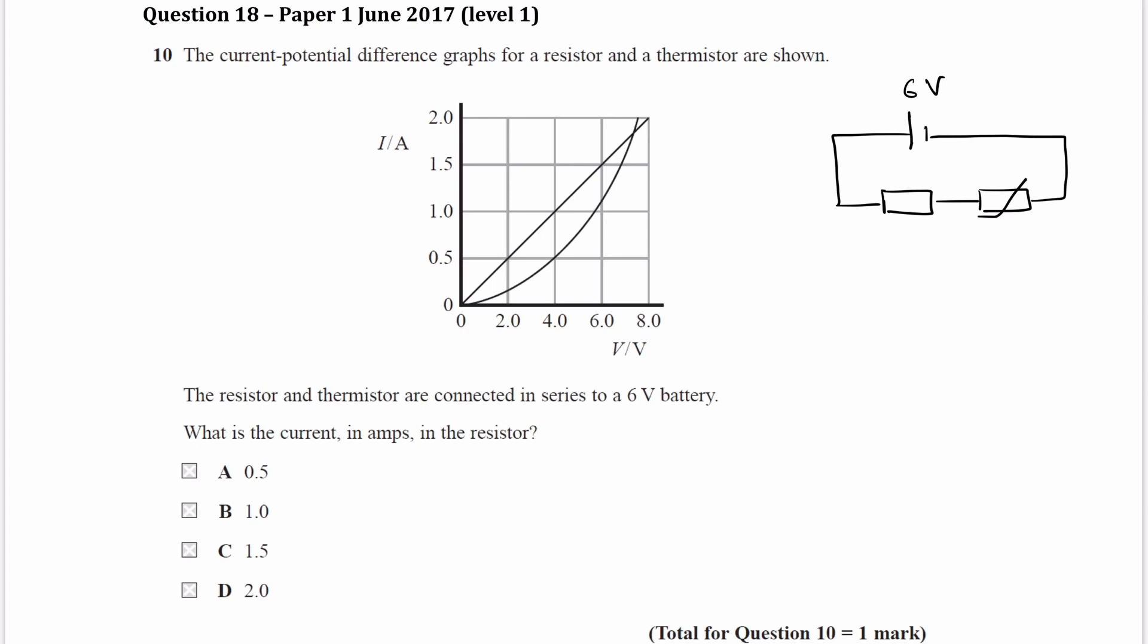So for instance, if we start with 1, so we go across from 1, this component, the resistor, has a voltage of 4 volts, and then the thermistor has a voltage of about, let's say, 5.6 or so volts. And those two will not add up. 4 and 5.6 will not add up to make 6 volts. So then we consider a different current.